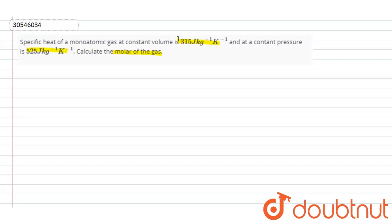So, the specific heat of a gas at constant pressure is this much. That is, the specific heat is 525 joules per kilogram per kelvin. And the constant volume is 315 joules per kilogram per kelvin.